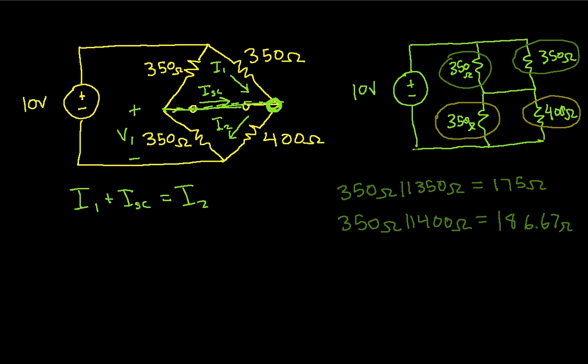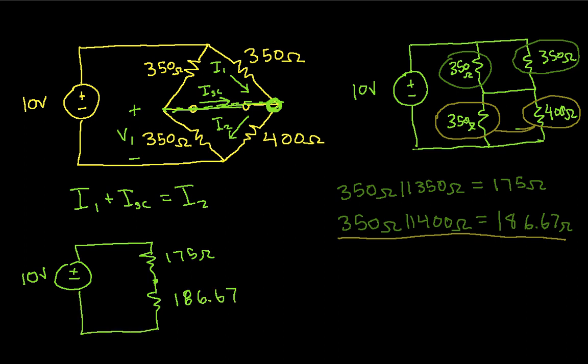So what that means is, just to make it clear, this computation here corresponds to these two guys. So now I can redraw my circuit as the following. I have 10 volts, 175, 186.67. And now I need to find this voltage which I've called V1.